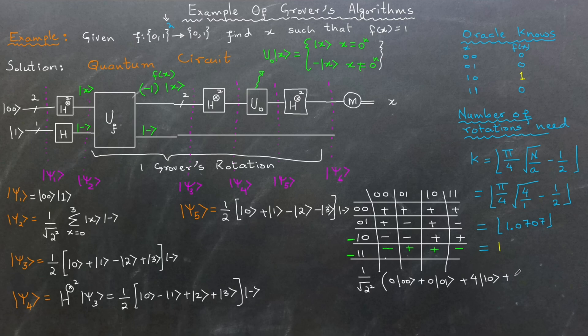This means that when we measure the first register, we obtain the value 2 with 100% probability. This is indeed the correct value of x where the function f outputs 1.